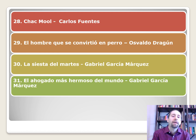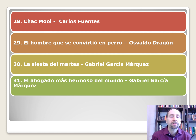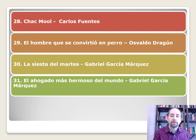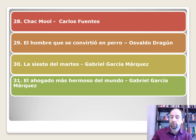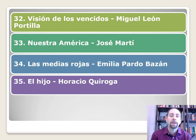Chac Mool — a god of the Aztecs or Maya, the god of rain — by Carlos Fuentes, a very interesting story. El hombre que se convirtió en perro by Osvaldo Dragún — it's a strange title, and Osvaldo Dragún seems like a different kind of name, which helps me remember it. La siesta del martes by Gabriel García Márquez, and also by him: El ahogado más hermoso del mundo — very interesting short stories that I love for the twists at the end.